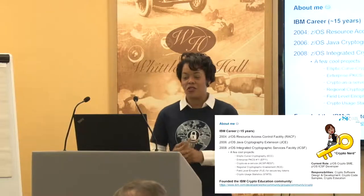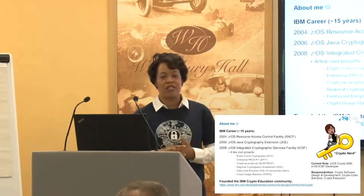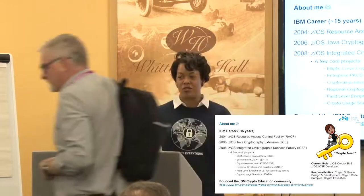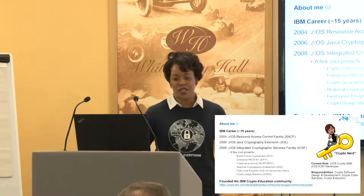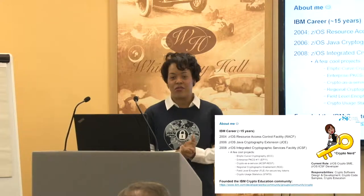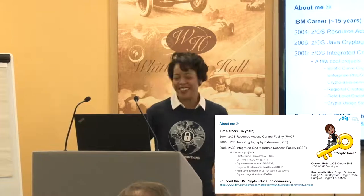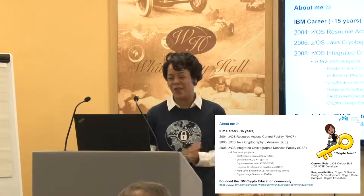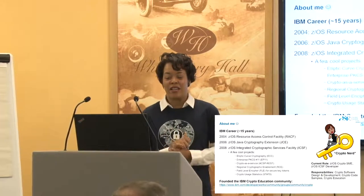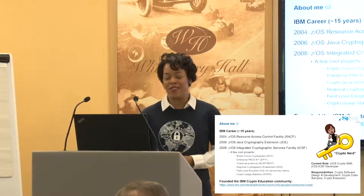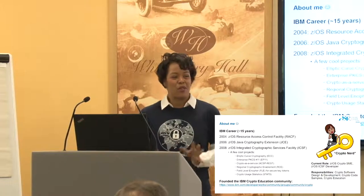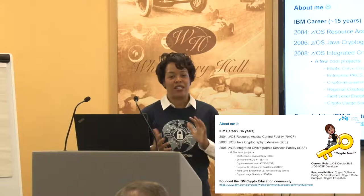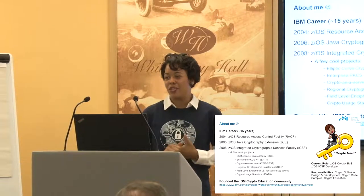A little about me: I've been at IBM for about 15 years, always in the ZOS security development organization. I started out on the RACF team, then went over to the Java crypto team because they needed help and I wanted to learn something new. After that, the ICSF team needed help, so I jumped over there. My first three or four years at IBM, I kept jumping from team to team, which gave me the ability to see different aspects of ZOS security.